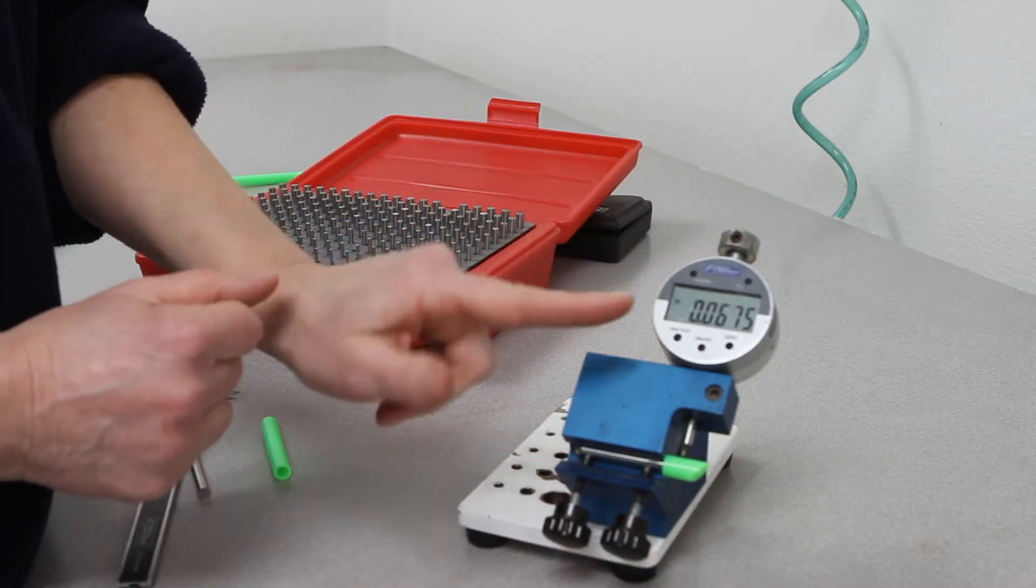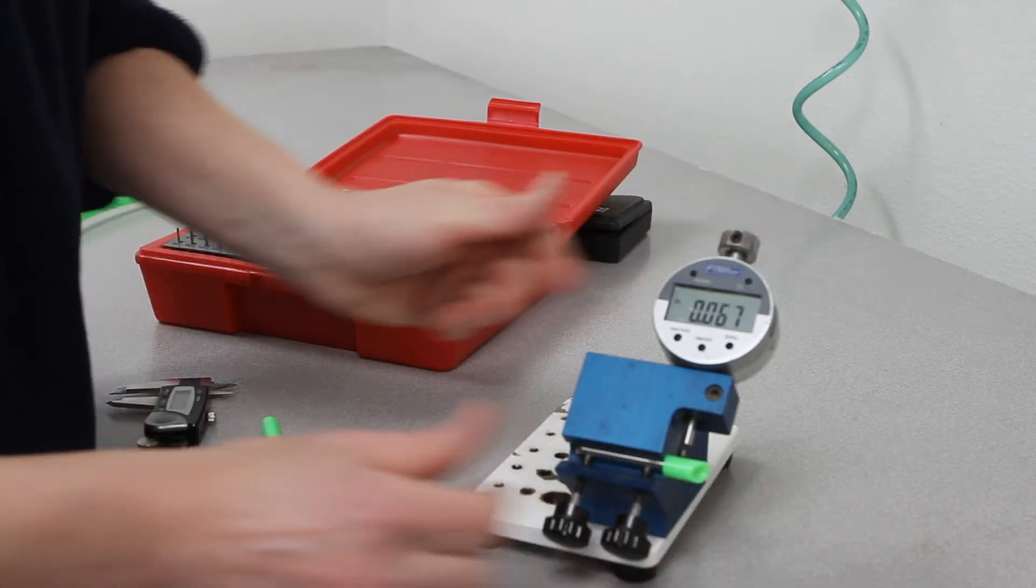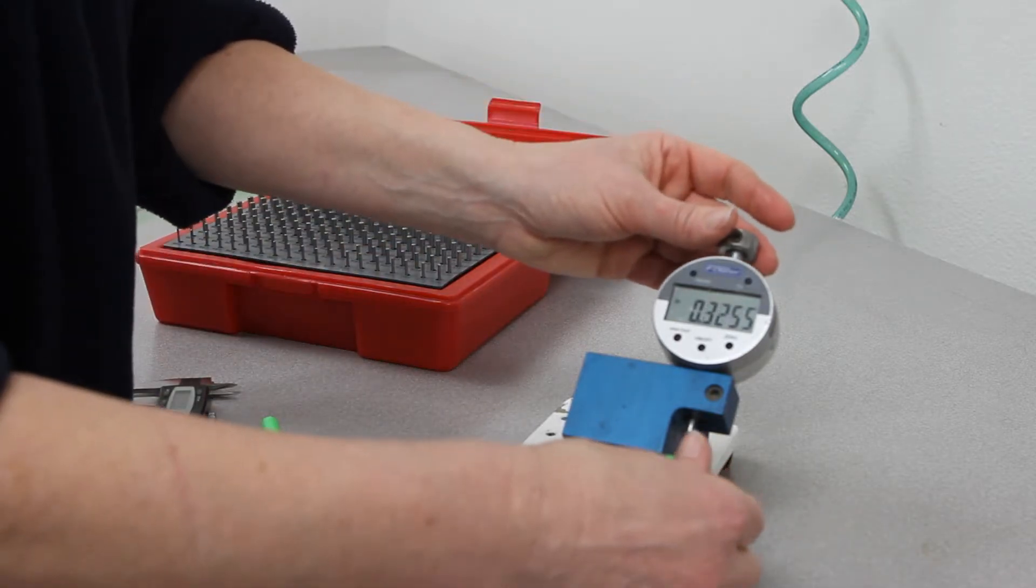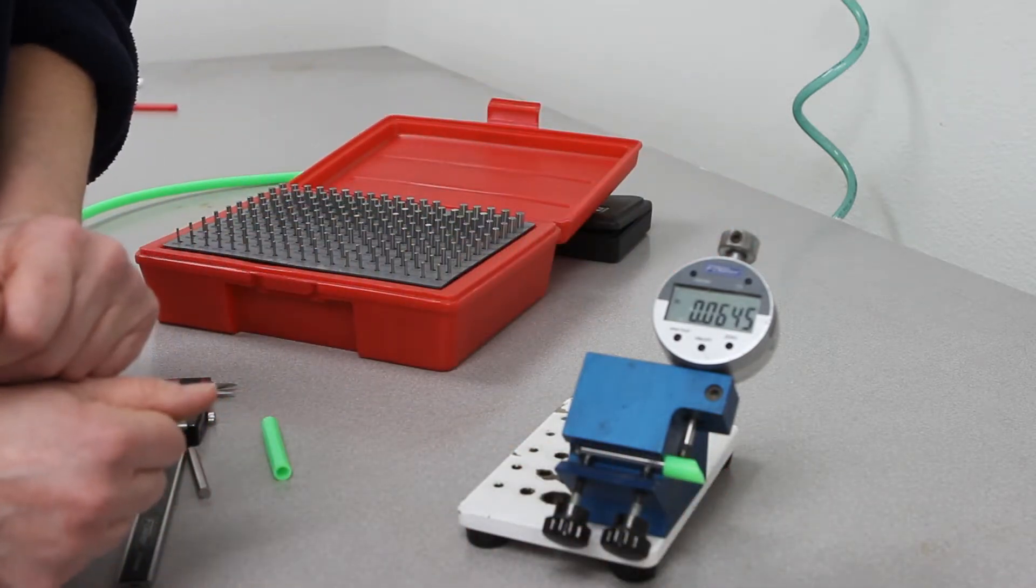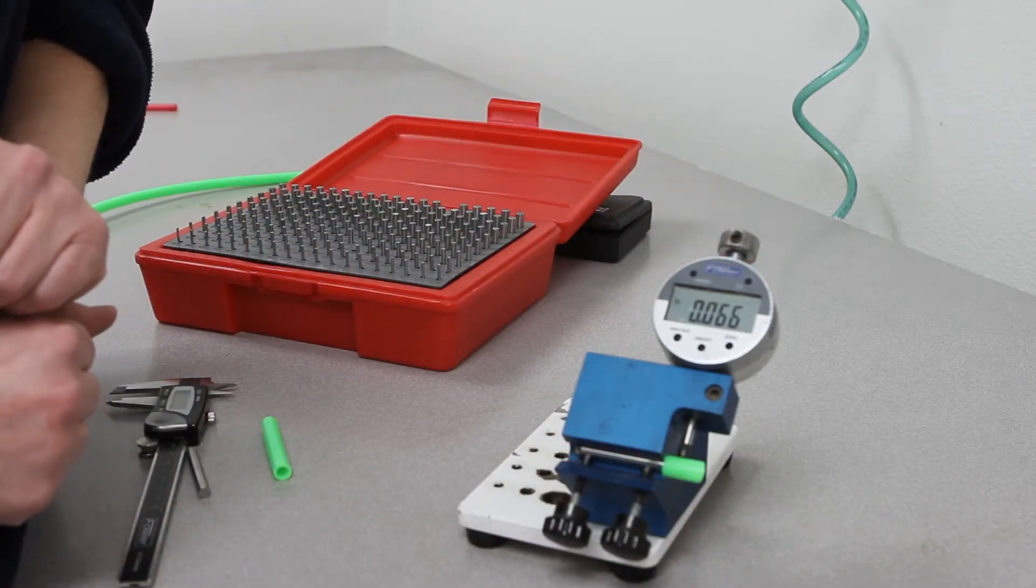My first measurement is 0.067. I'm going to turn it a quarter turn. 0.067. One more. 0.064. And then my last turn. 0.066.